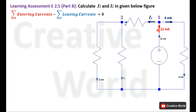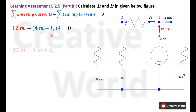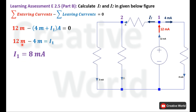Placing the entering and leaving currents of node 1 into the KCL equation, only one variable is present — I1. Rearranging the equation by moving I1 to the other side and adding the two currents gives us I1 equal to 8 mA.